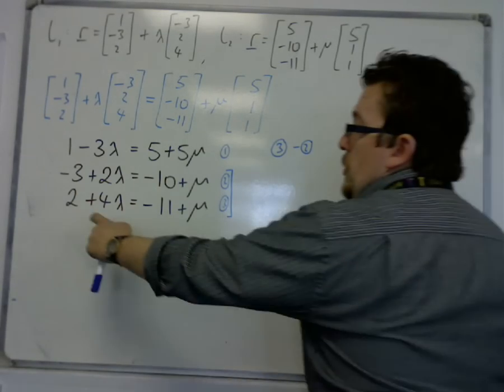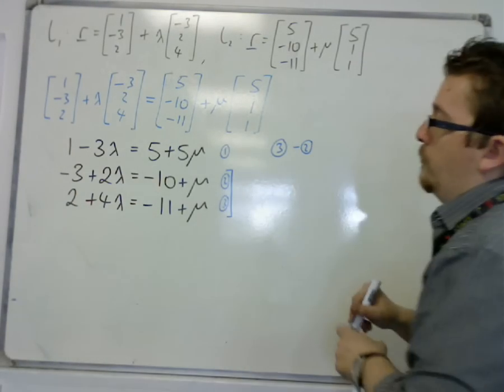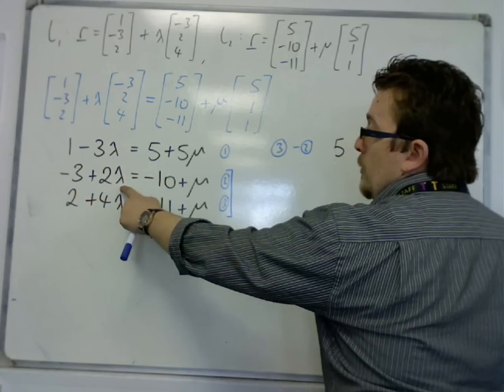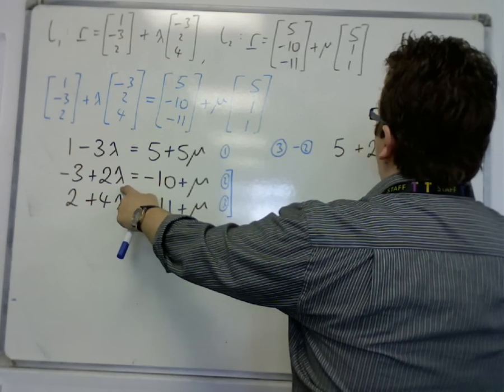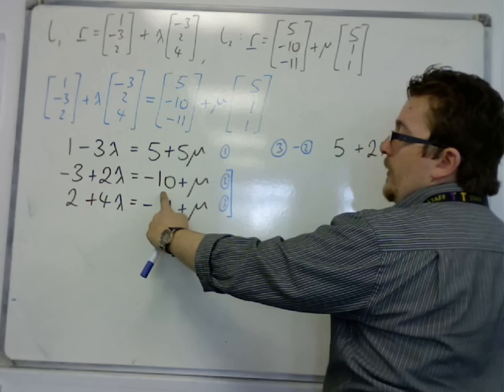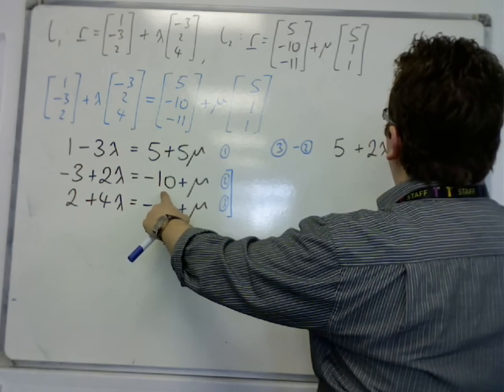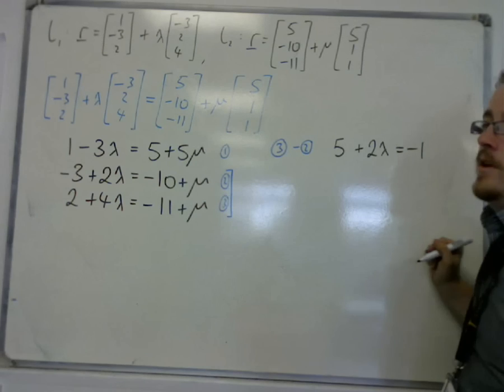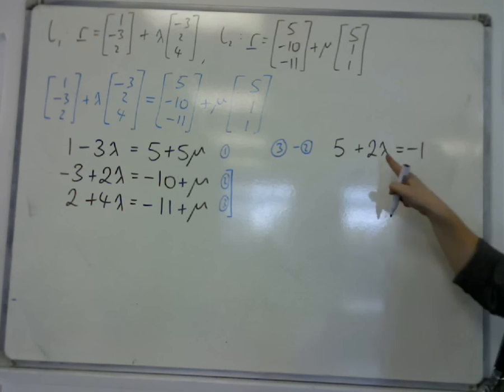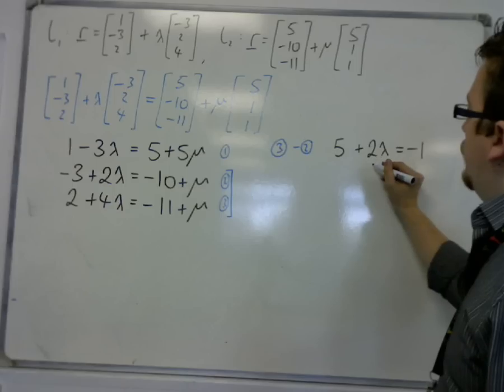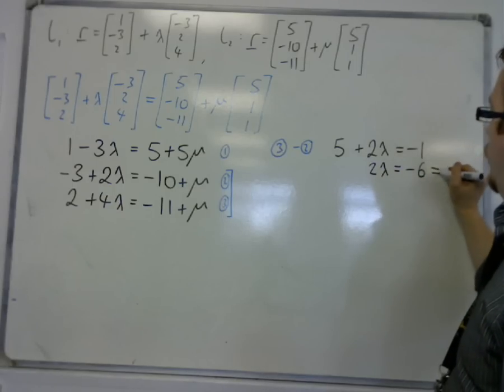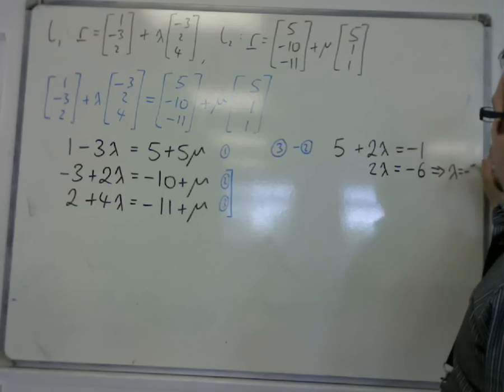So I have 2 take away minus 3, that's 5, and 4 lambda take away 2 lambda is just 2 lambda. Minus 11 take away minus 10 is minus 1, and mu take away mu is 0, which is what I wanted. So if I take 5 from both sides, I get 2 lambda is minus 6, so lambda must be minus 3.